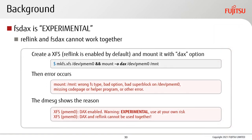Here is the background of the issues we need to solve. FSDAX is still in experimental status on XFS file system because Reflink and FSDAX cannot work together. If you try to create an XFS file system with the Reflink feature enabled and then mount it with the DAX option, you will see an error message and a dmesg message stating that DAX on XFS is experimental and they cannot be used together.